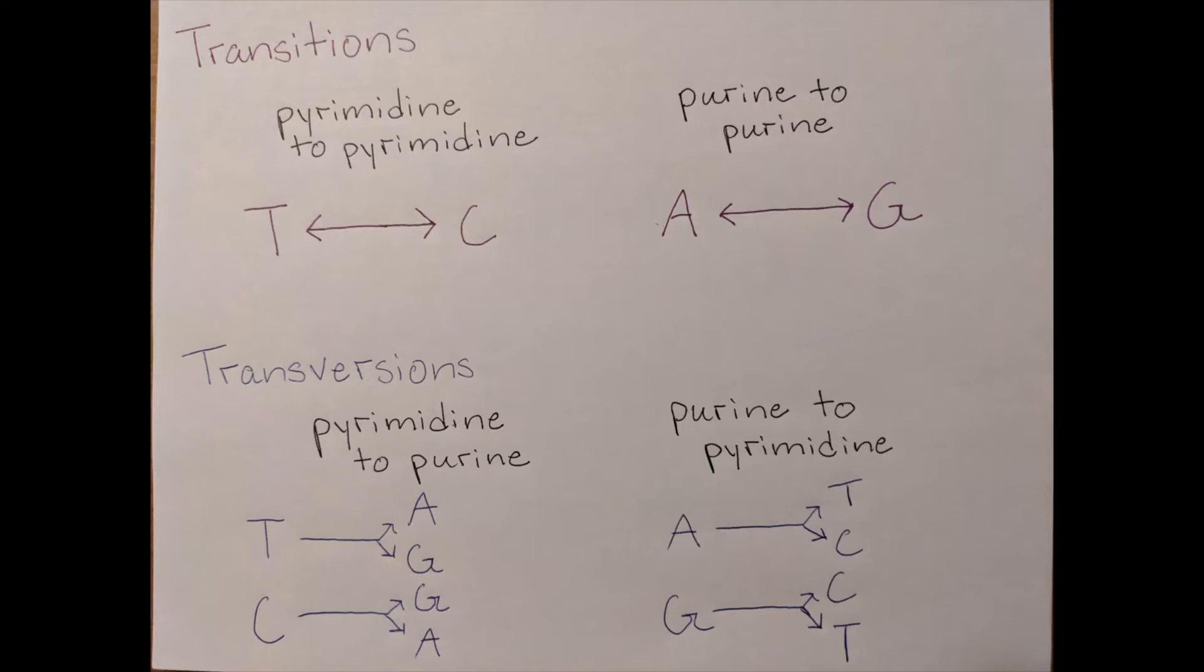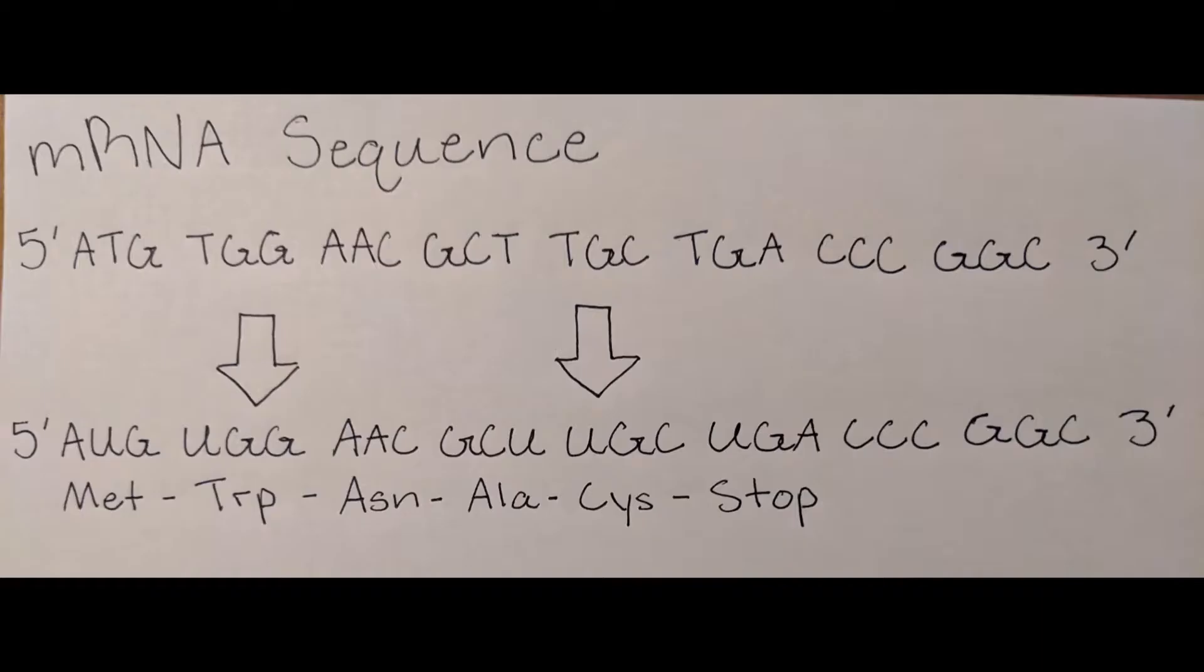Purines and pyrimidines can experience two kinds of mutations, transition and transversion. A transition mutation is the replacement of a purine for a purine or pyrimidine for pyrimidine. A transversion mutation is the replacement of a purine for pyrimidine or pyrimidine for purine.